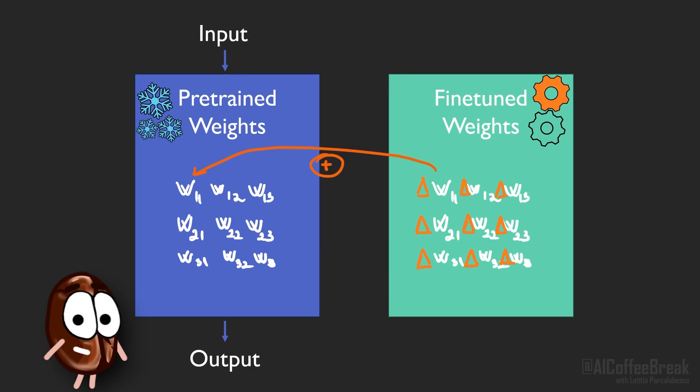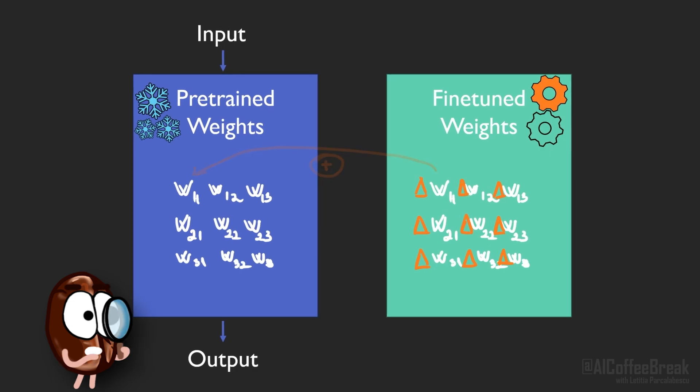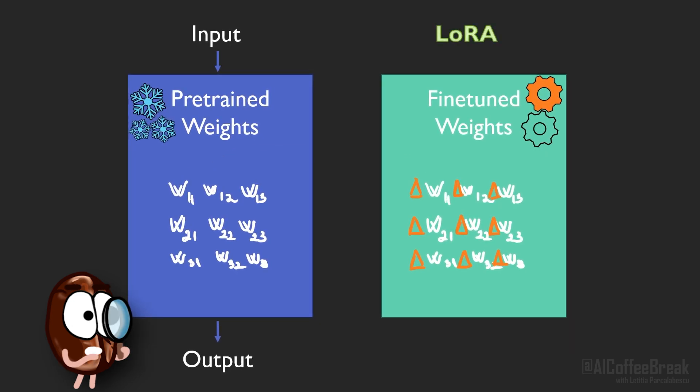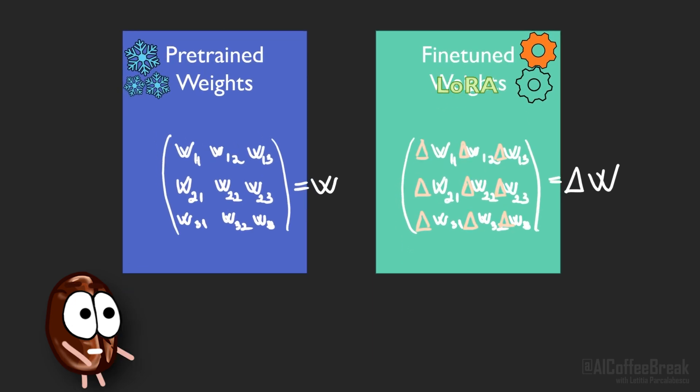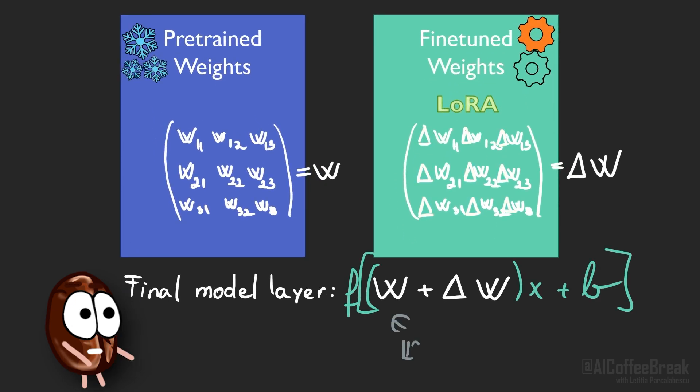Well, this is the trick in LoRa. It reduces the number of trainable parameters. How? Well, you maybe know that a layer in a neural network is a matrix multiplication to the input of the layer plus the addition of a so-called bias vector, followed by a nonlinear operation.